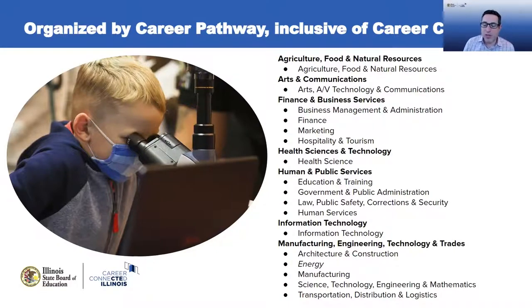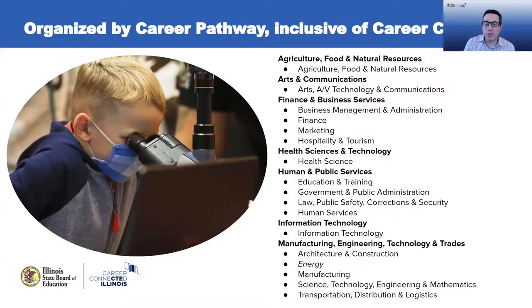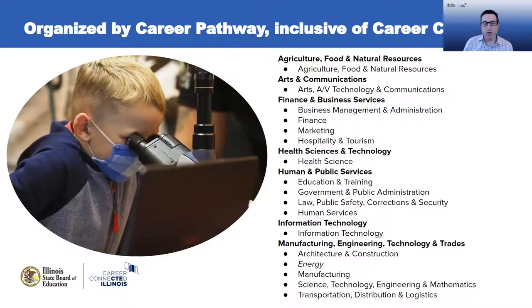Some pathways, like agriculture, food, and natural resources, or information technology, align with one career cluster. Other career pathways, like finance and business services, or manufacturing, engineering, technology, and trades, have multiple career clusters. One implication is that when we use the advanced CTE standards in these documents, the career clusters are how those standards have been written. That means our state-level career pathway standards documents vary widely in length — career pathway areas with more career clusters become much longer documents. That may or may not be an issue, but we want to make you aware of it, especially if you're clicking through and looking at the different CTE standards documents for the different career pathways.